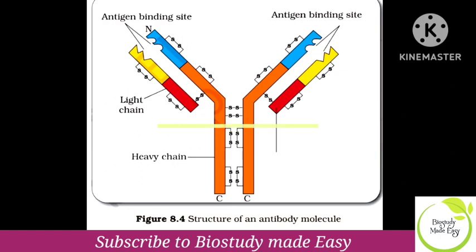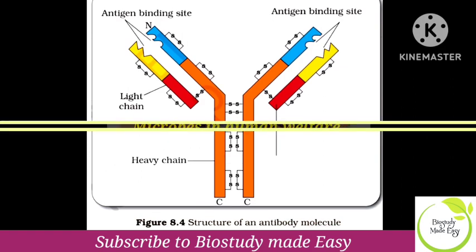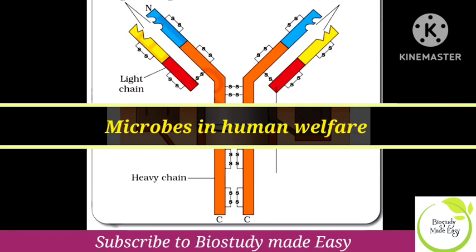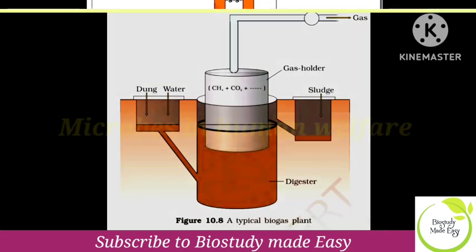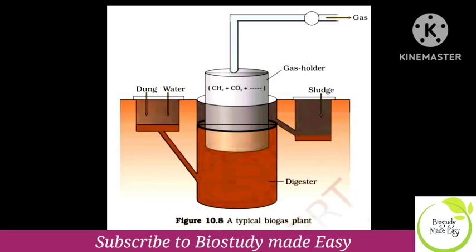Next chapter is Microbes in Human Welfare. In this chapter, one important diagram is the biogas plant diagram — that is for three marks. Make sure to note it correctly. This completes the important diagrams for the mid-term exam up to Microbes in Human Welfare chapter.